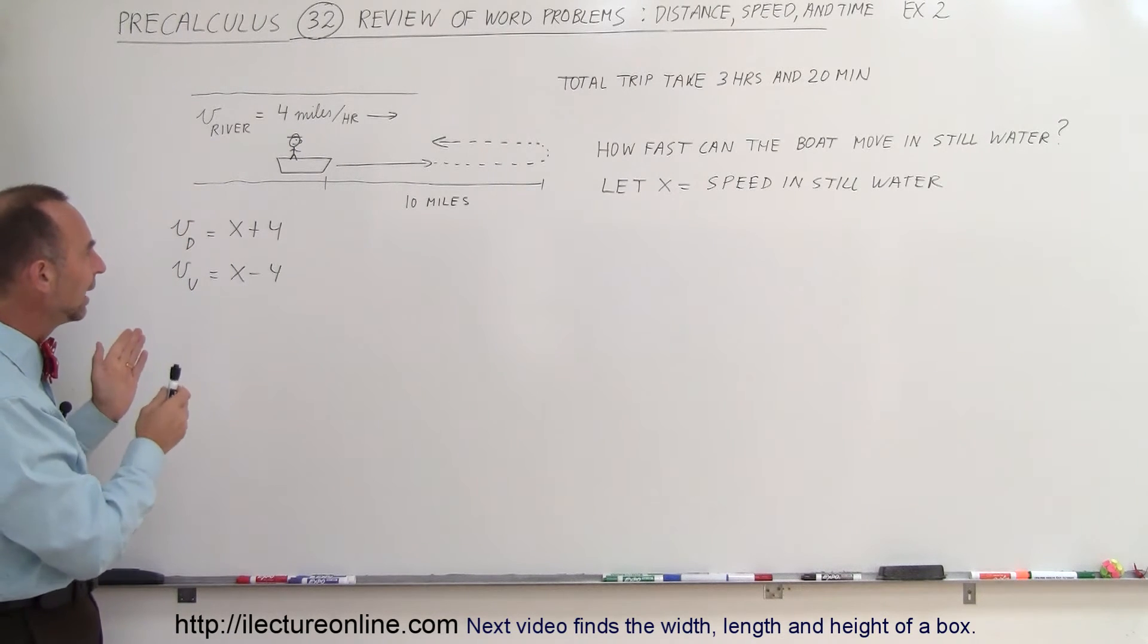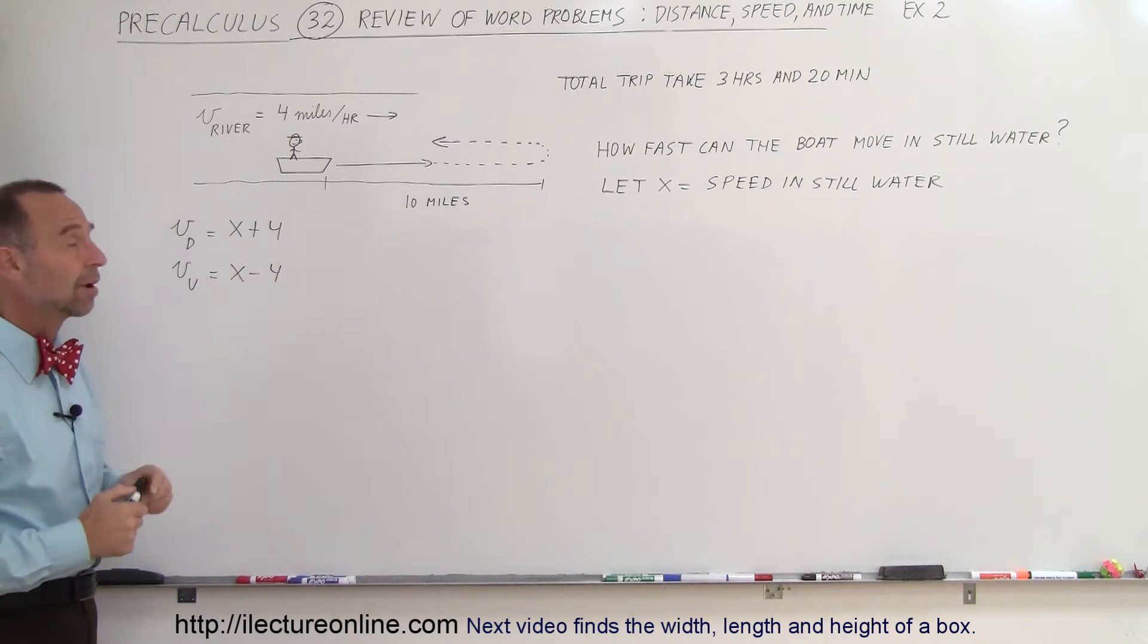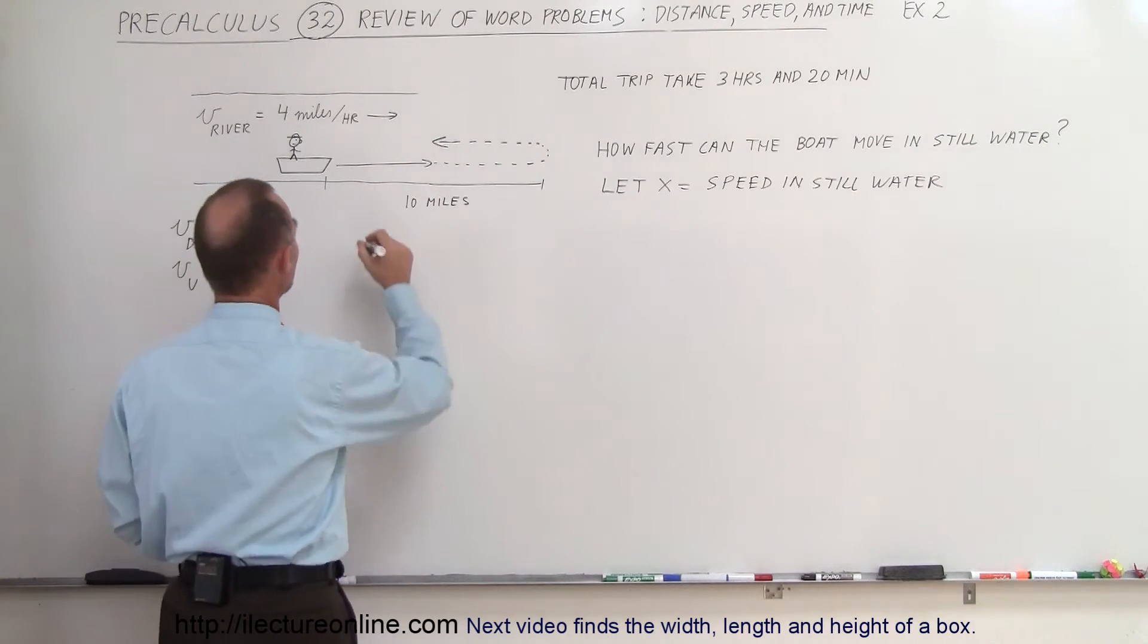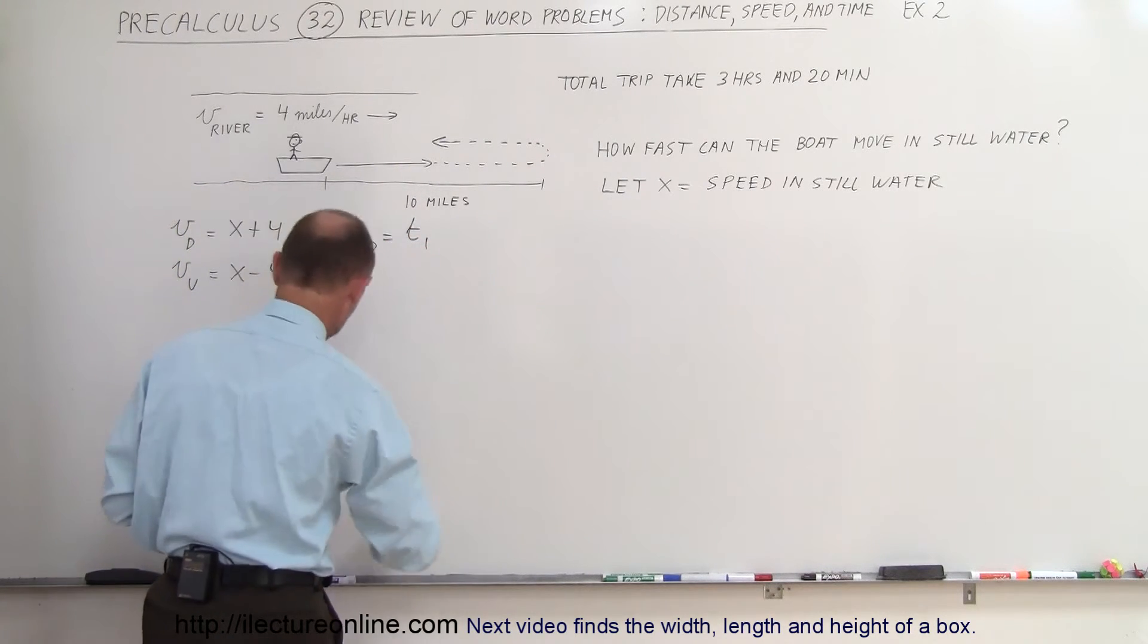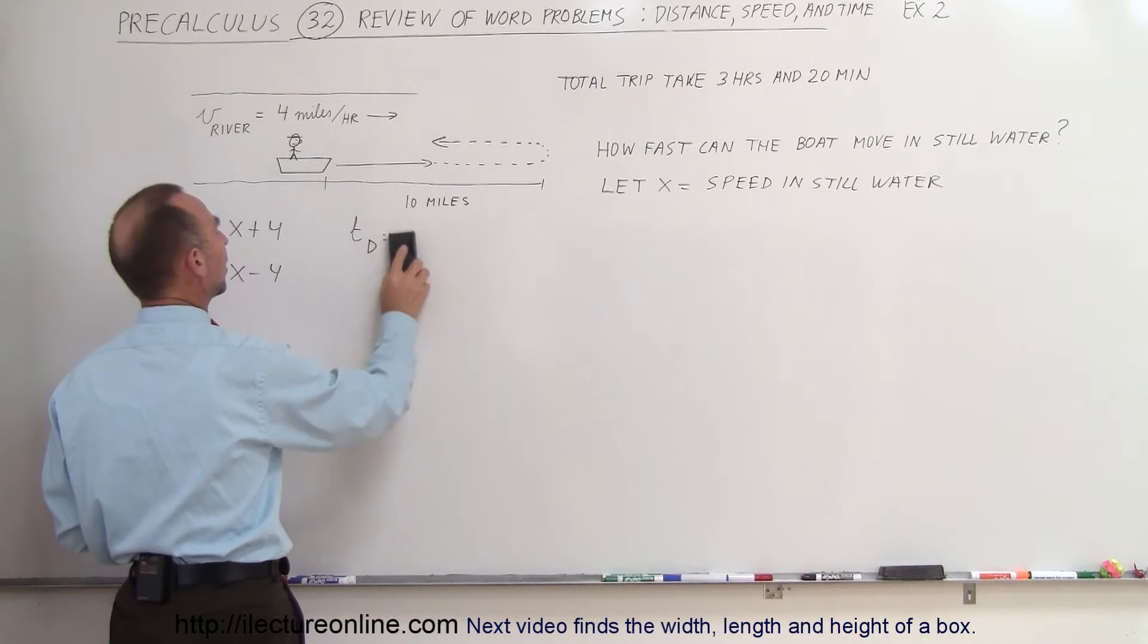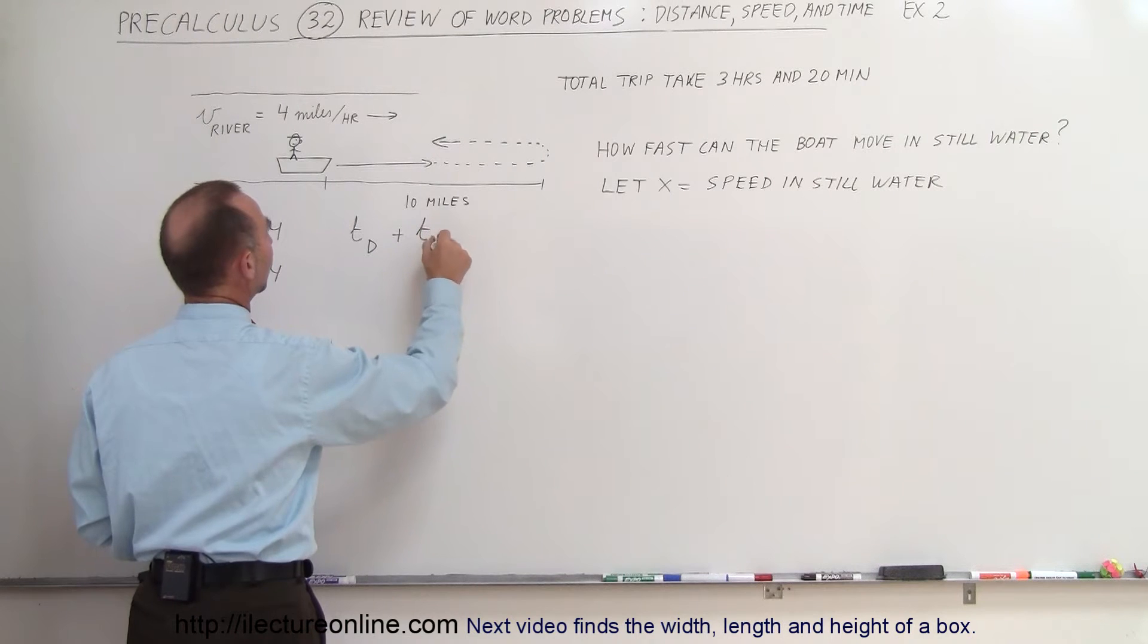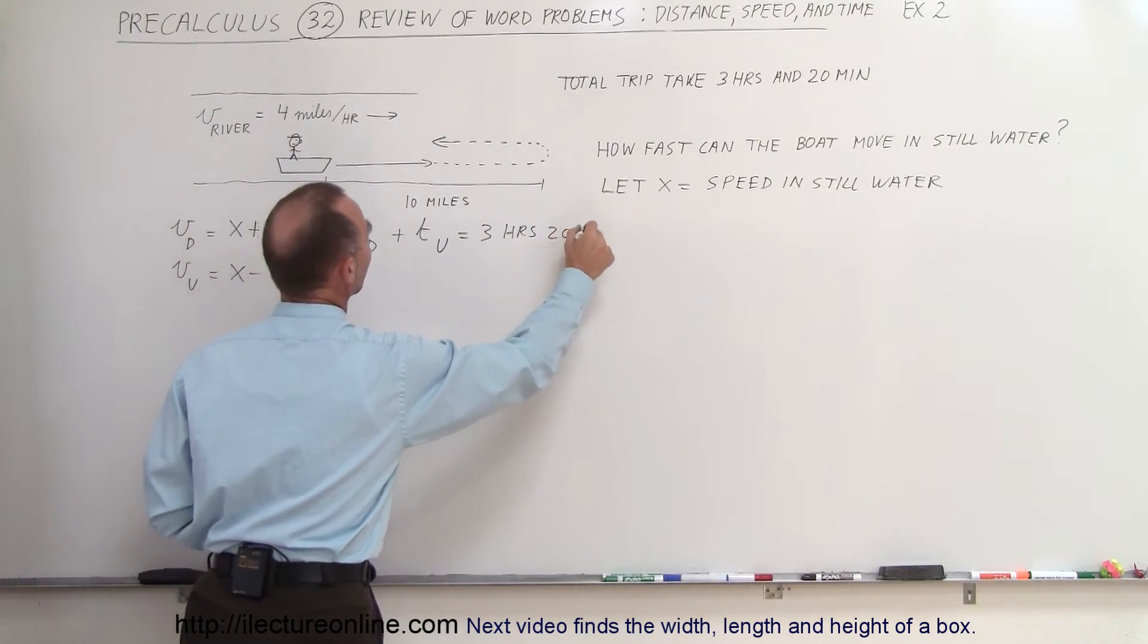Alright, so now we define in terms of x how fast the boat can travel downstream and upstream. If we now let the time downstream, oh no, we don't even need to do that. Time downstream plus the time upstream will equal 3 hours and 20 minutes.